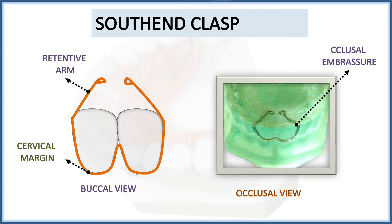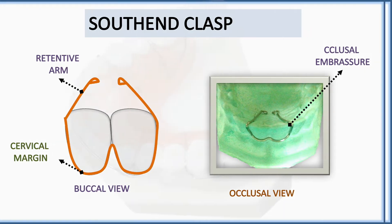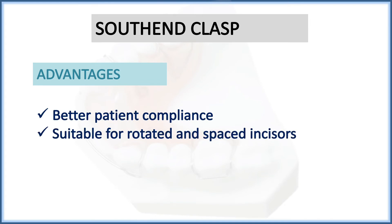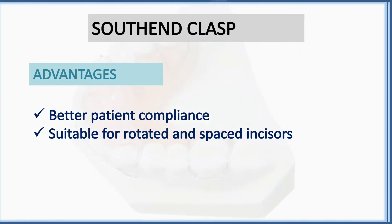The South End clasp ends on the palatal surface of the central incisors as a retentive arm. Advantages: better patient compliance and suitable for rotated and spaced incisors. It is an anterior clasp used only in the anterior region, occupying the occlusal embrasures and acting as a retentive arm on the palatal surface.